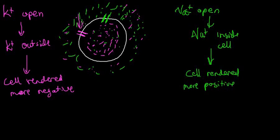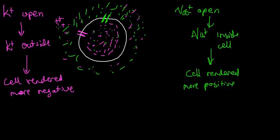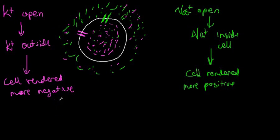Now let's say I have a potassium channel and it opens. Potassium would want to come out because there's so little potassium outside and so much inside — it's just going to rush out. So I'm going to lose a lot of positive charges, and basically the cell gets more negative. This is quite important to understand.